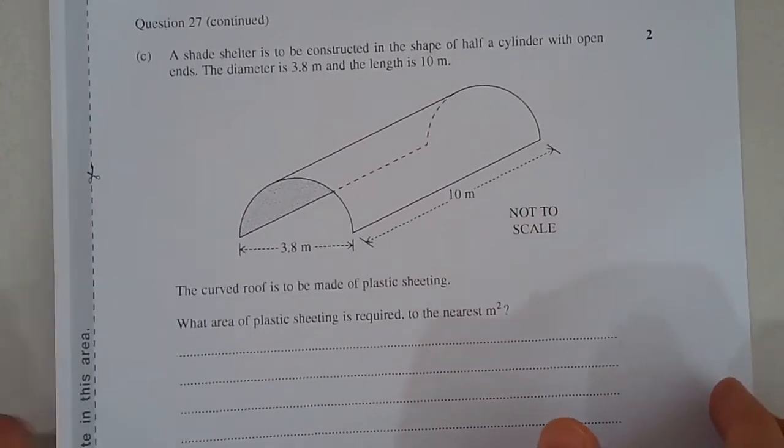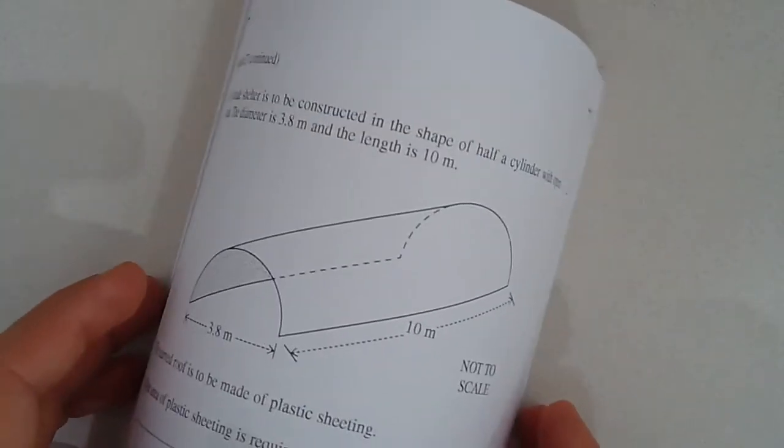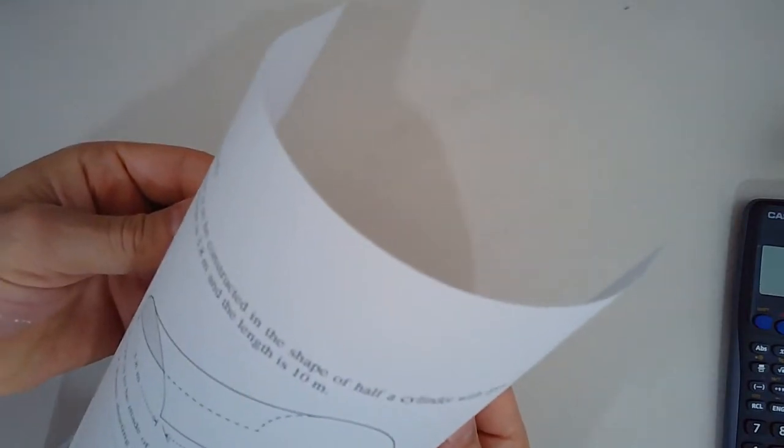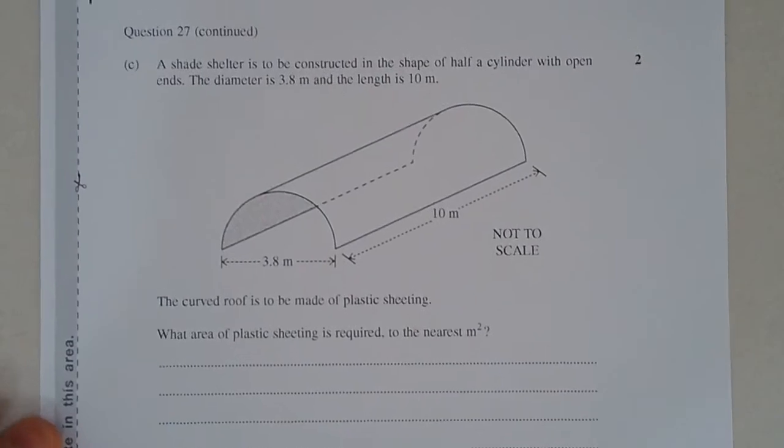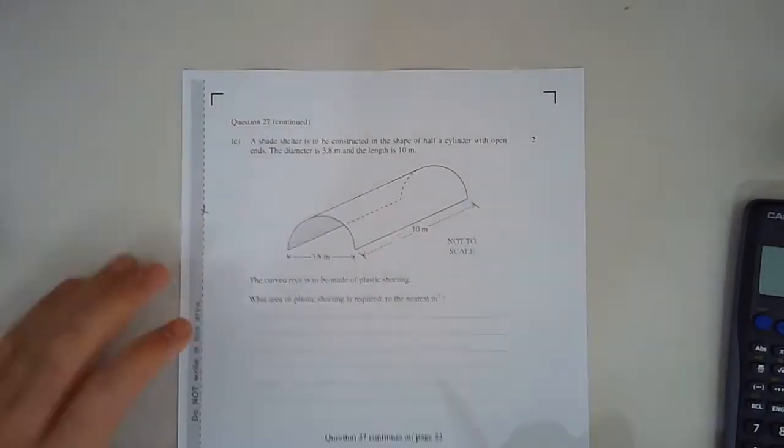Now just imagine the shape. If I was to take this piece of paper and roll it into a half cylinder, you're talking about something that looks like this. Now if you were to flatten this piece of paper back out, you get a rectangle shape.